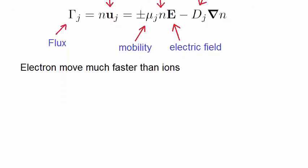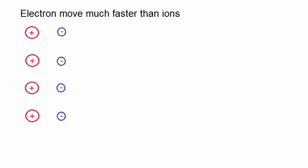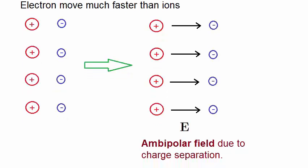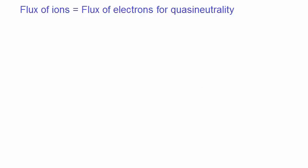In plasmas, both electrons and ions are mobile, but electrons are much less massive than ions, so they are more mobile—that is, they move faster than ions. The consequence of this is as follows: imagine you have electrons and ions as shown. Even if the energies of the two particles were equal, you will find that the electrons move faster than the ions. The consequence of that is that this charge separation will produce an electric field, which is known as the ambipolar field.